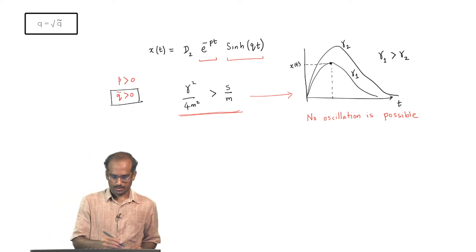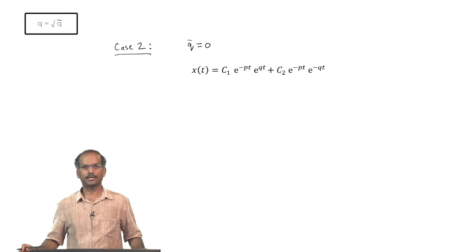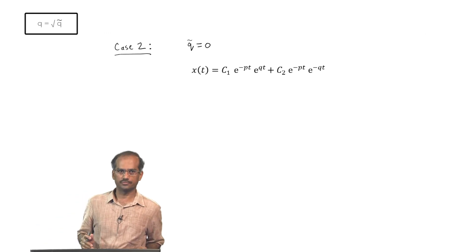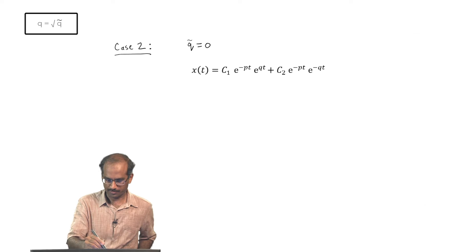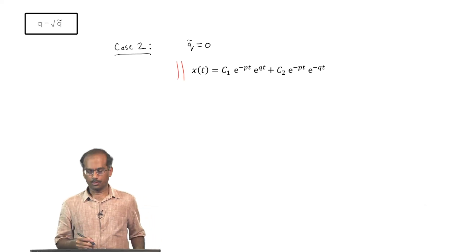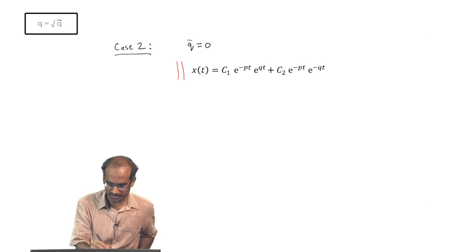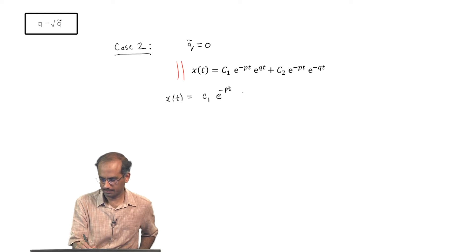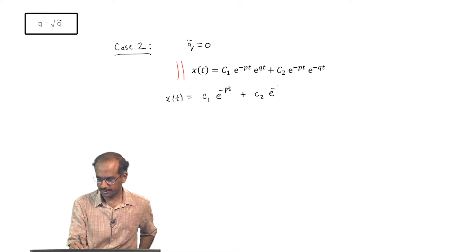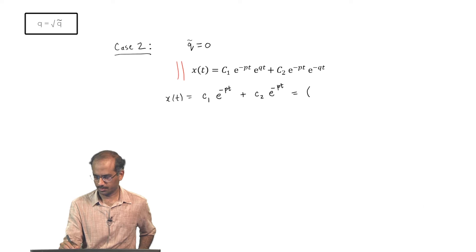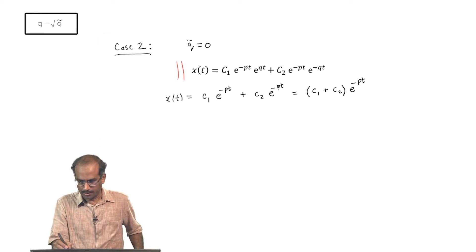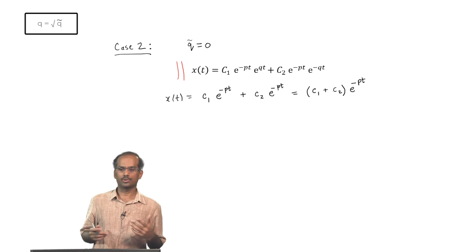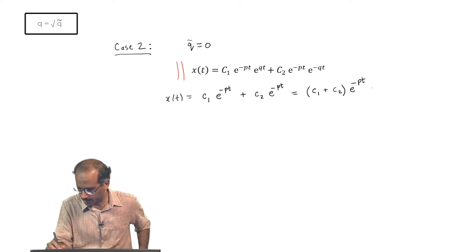With this, let us go to Case 2. Starting again from the original solution, I put q = 0. If I do that, the equation simplifies considerably: x(t) = C1 e^(−pt) + C2 e^(−pt) = (C1 + C2) e^(−pt). Since C1 and C2 are constants, their sum is another constant, so I just call it C, giving x(t) = C e^(−pt).